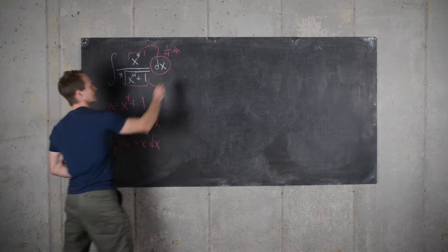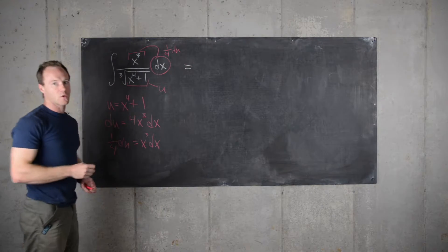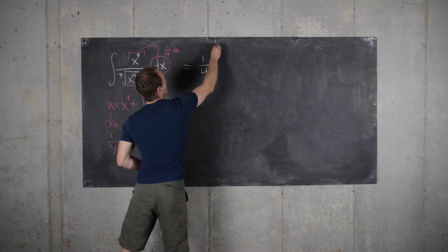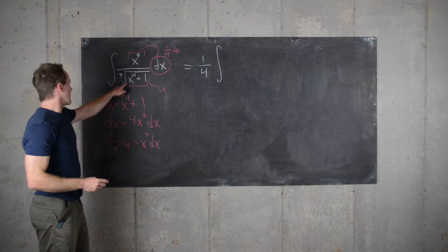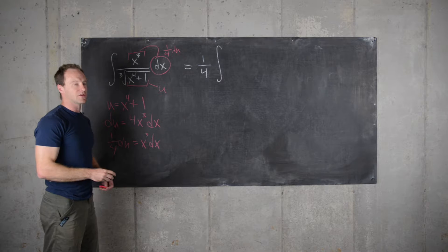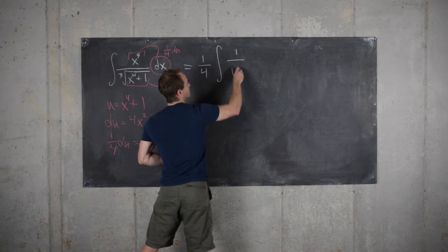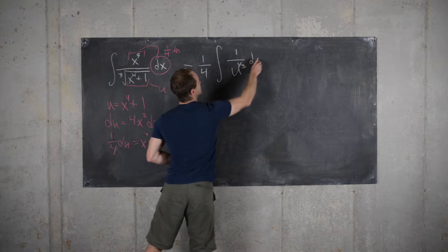Okay, great. So let's see where that gets us. We can factor the quarter out of the integral, and we have 1 quarter the integral of, and now let's replace this cube root with a rational power. So we have 1 over u to the 1 3rd du.